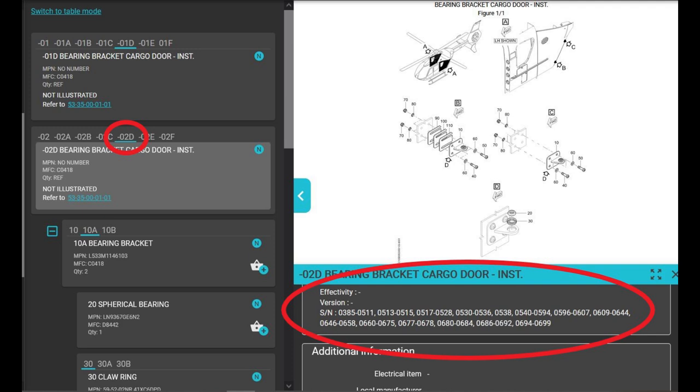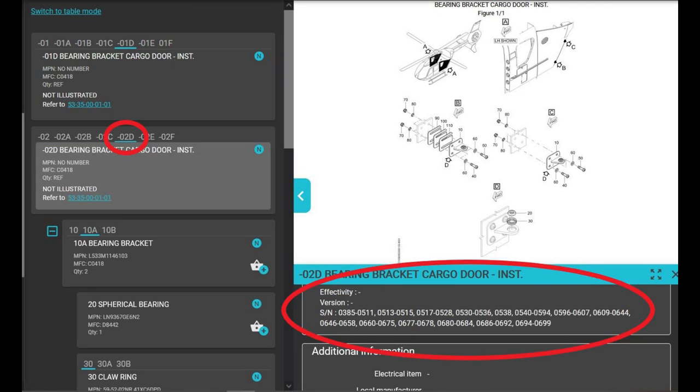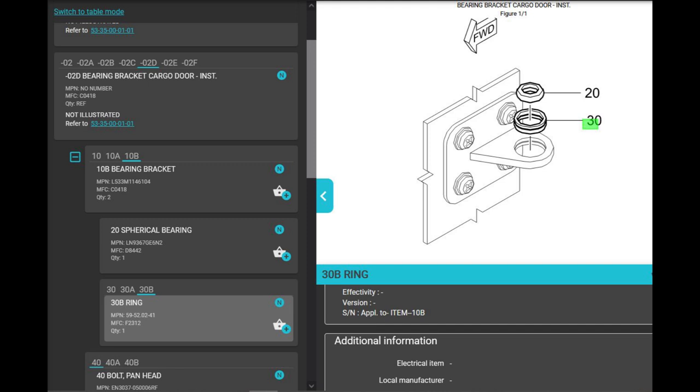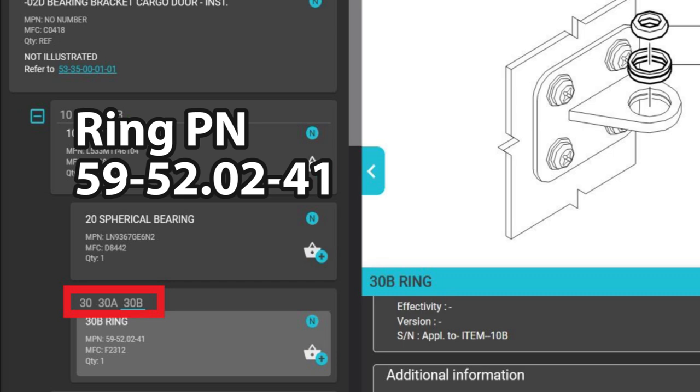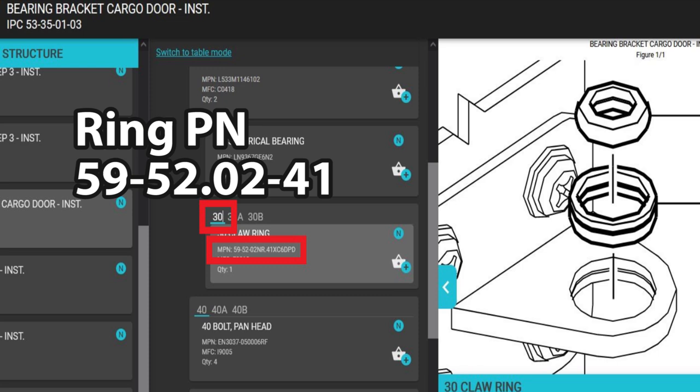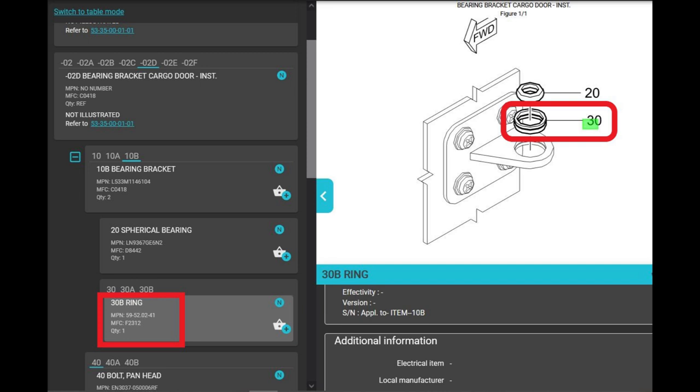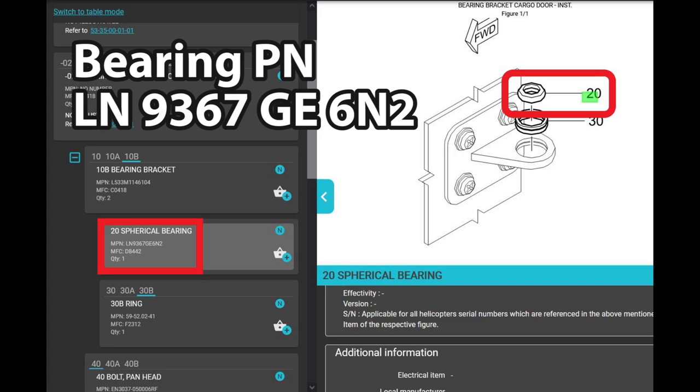The one I'm working on is 01 Delta. I click on 01 D and it shows you the effectivity down on the bottom right. If you scroll down in the IPC to number 10 which is the bearing bracket and you click that plus sign there, that expands it out. And it shows you the parts that are part of that assembly. The parts that we're talking about are spherical bearing and the ring. 30, 30A, and 30B is the ring. They have the same base part number 59-52 decimal 02-41. The part number you need is this one right here, 30B. Spherical bearing is the same for all of them, part number LN9367GE6N2.